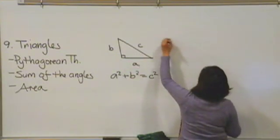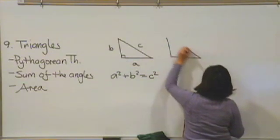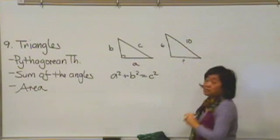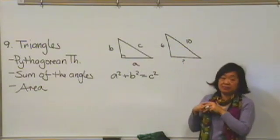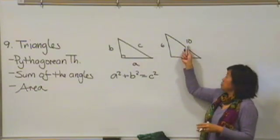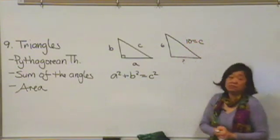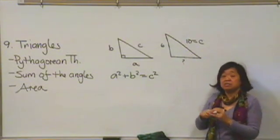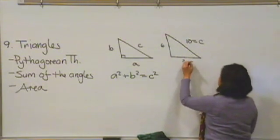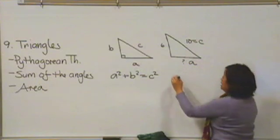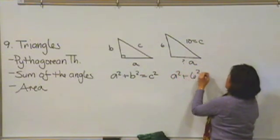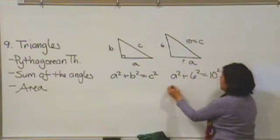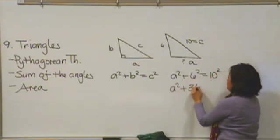So for example, suppose we were given this problem here. Find the missing side of that triangle. Well, for sure, this side has to be C because it's the longest side. Now whether you want to call this A or whether you want to call it B, totally up to you. I'm just going to call it A. I know that A squared plus B squared is equal to C squared. And now I can just solve this equation. A squared plus 36 is equal to 100.